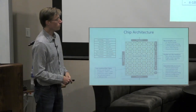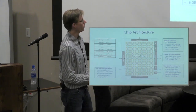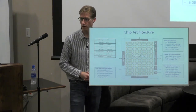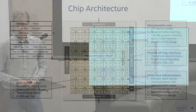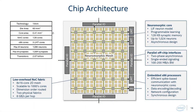Now onto the chip — that's done with philosophy, we're going to talk about bits and wires. This is what the chip looks like under the covers. It's mainly just this neuromorphic mesh. We have a single core; each of the cores implements up to 1024 neurons, in this time-multiplexed way. We have a collection of memories inside it which collectively represent all the state and configuration for those neurons.